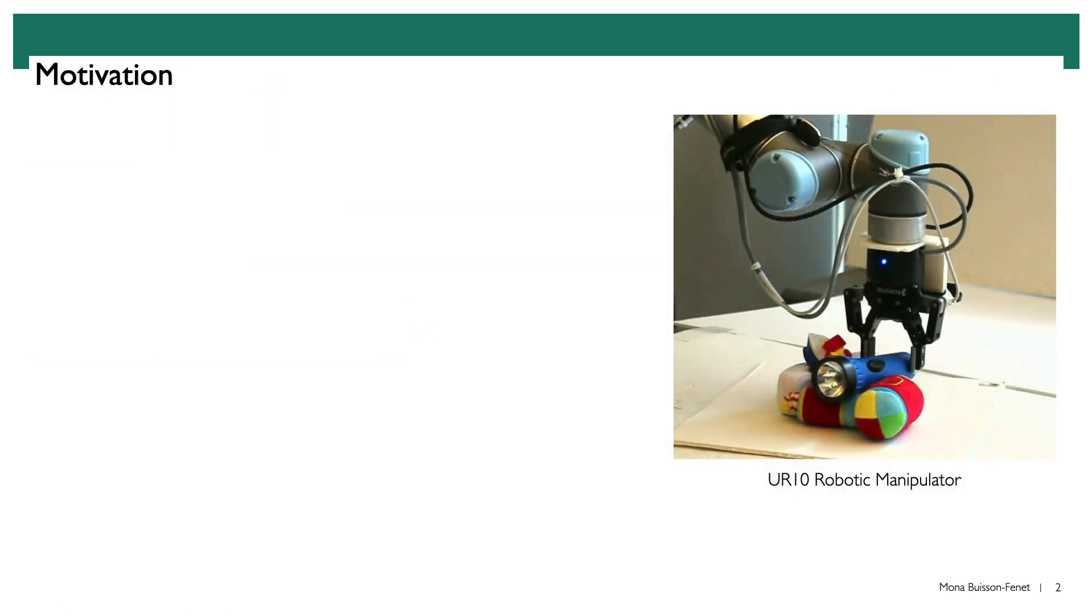Let's start with some motivation. A lot of scientific disciplines are trying to understand the dynamical systems that evolve around us. For example in engineering that can be a robot and we want to build a mathematical representation of this robot in order to predict and control its behavior.